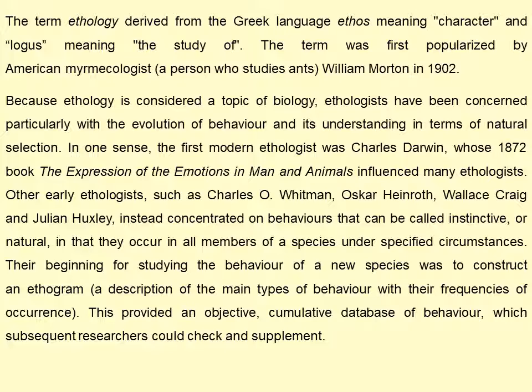The term 'ethology' is derived from the Greek language — 'ethos' meaning character and 'logos' meaning the study of. The term was first popularized by an American myrmecologist — a person who studies ants — in 1902. Because ethology is considered a topic of biology, ethologists have been particularly concerned with the evolution of behavior and its understanding in terms of natural selection. The first modern ethologist was Charles Darwin, whose 1872 book 'The Expression of the Emotions in Man and Animals' influenced many ethologists. The expression of emotions in man would be psychology, but when associated with animals, it becomes ethology.